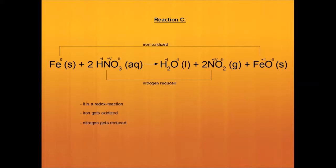we can see that iron changes its oxidation number from 0 to plus 2, which means that iron gets oxidized. Nitrogen changes its oxidation number from plus 5 to plus 4, so nitrogen gets reduced. These facts tell us that it is a redox reaction.